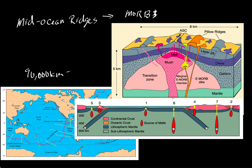Mid-ocean ridges are a dominant form of plate tectonics and are responsible for creating mid-ocean ridge basalt — MORB. Those MORBs cover two-thirds of Earth's surface. The blue areas are oceans, but underneath those ocean basins is a rock type referred to as mid-ocean ridge basalt or MORB. This is the dominant rock type, at least in terms of aerial coverage on our planet.